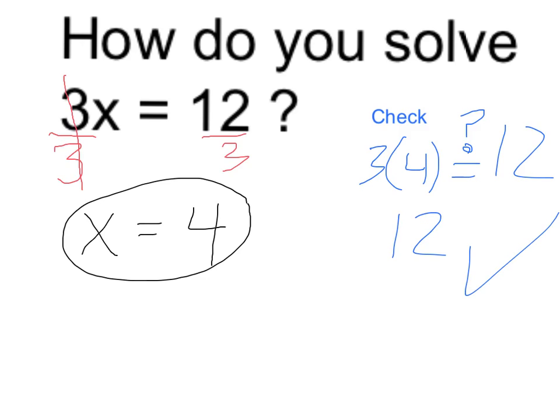My answer is x equals 4. Remember, I did that by undoing my multiplication. The way you undo a multiplication is through division.